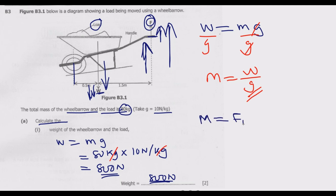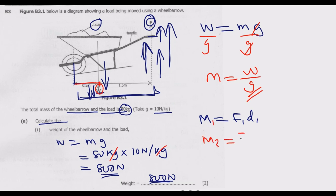A moment is calculated as force multiplied by the perpendicular distance from the pivot. So moment one equals force one times distance one, and moment two equals force two times distance two. At equilibrium, these two moments are equal: force one times distance one equals force two times distance two.